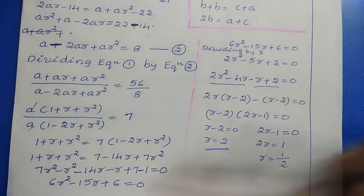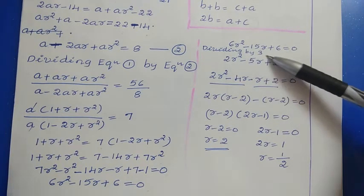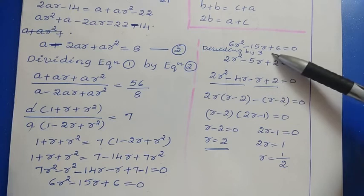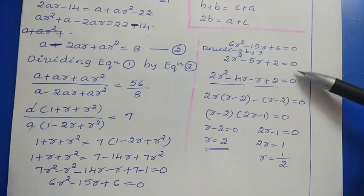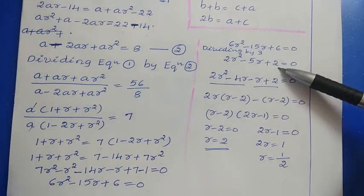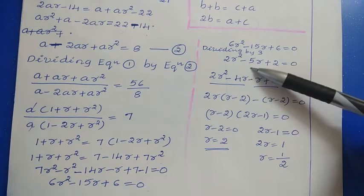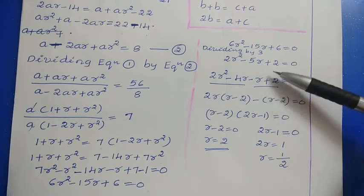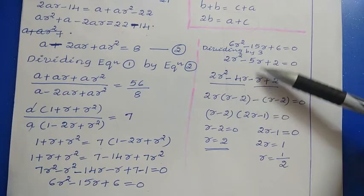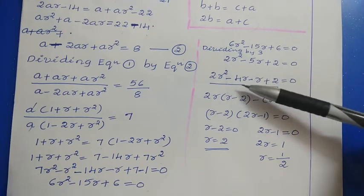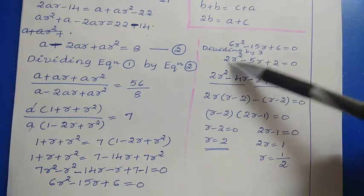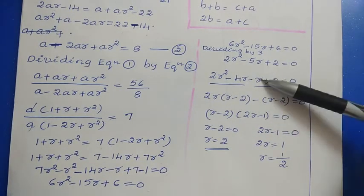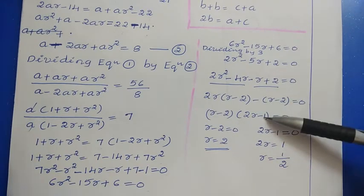Dividing all terms by 3: 2R squared minus 5R plus 2 equals 0. Factoring: we need two numbers whose product is 4 and sum is minus 5, which are minus 4 and minus 1. So 2R squared minus 4R minus R plus 2 equals 0, giving 2R(R minus 2) minus 1(R minus 2) equals 0, therefore (R minus 2)(2R minus 1) equals 0.